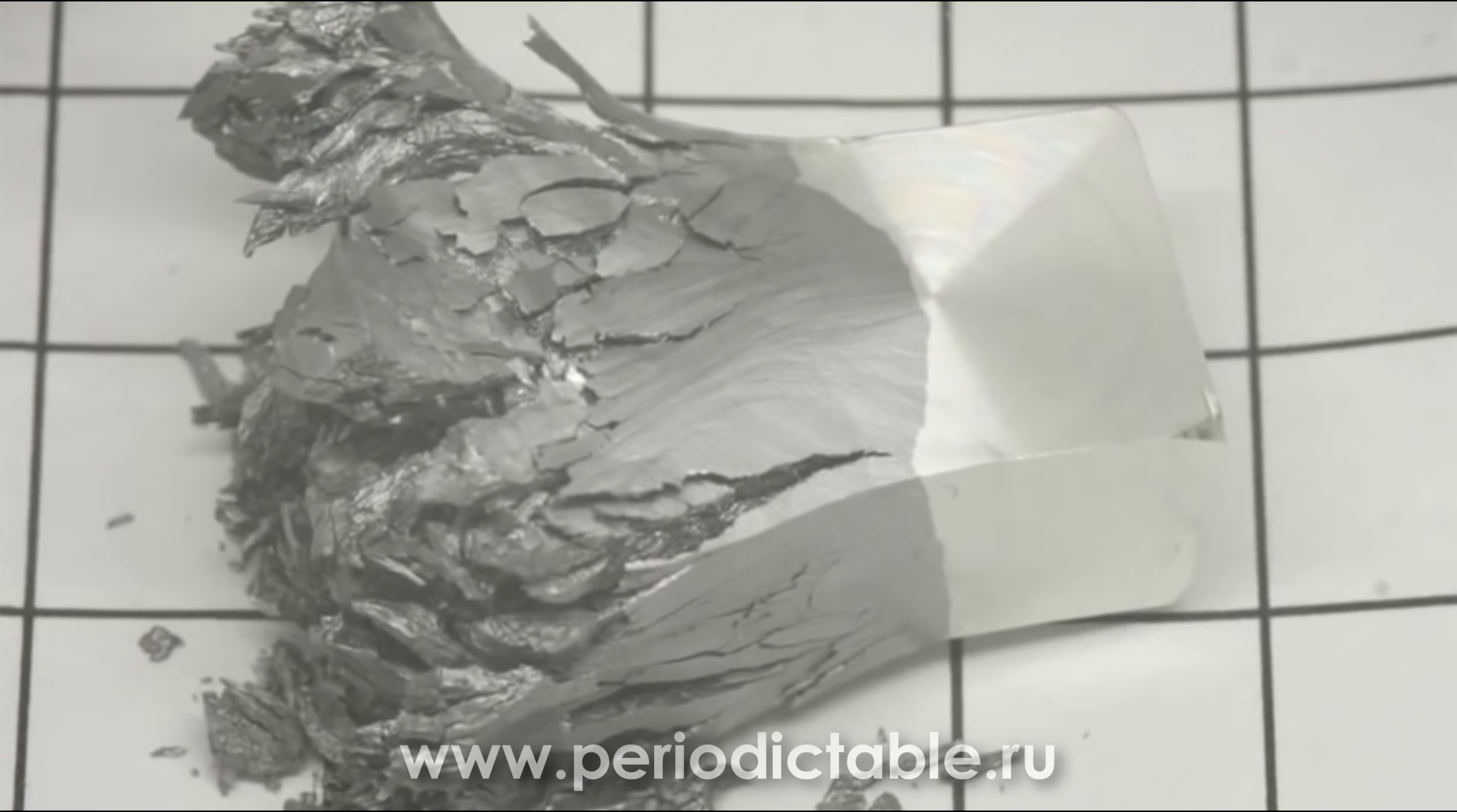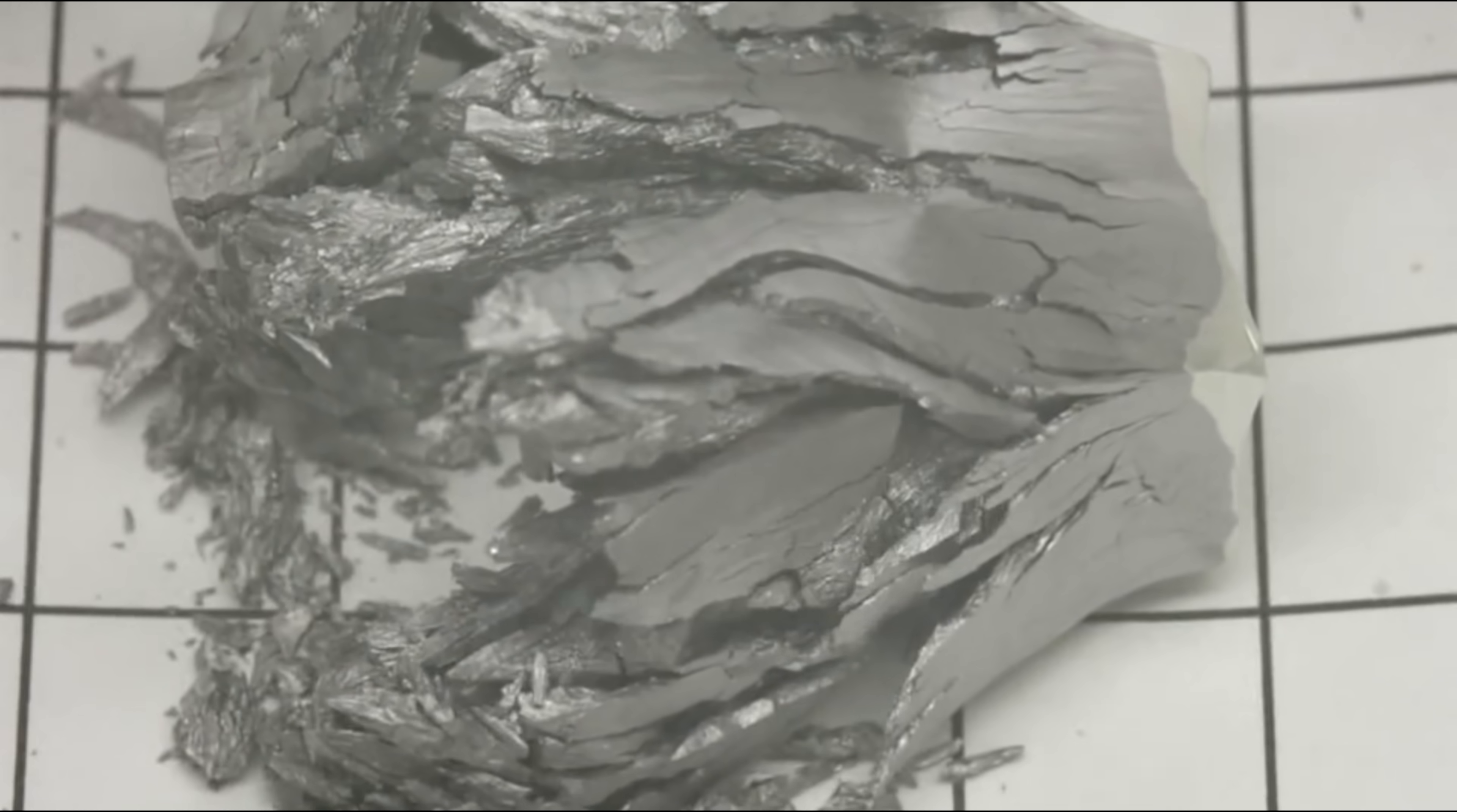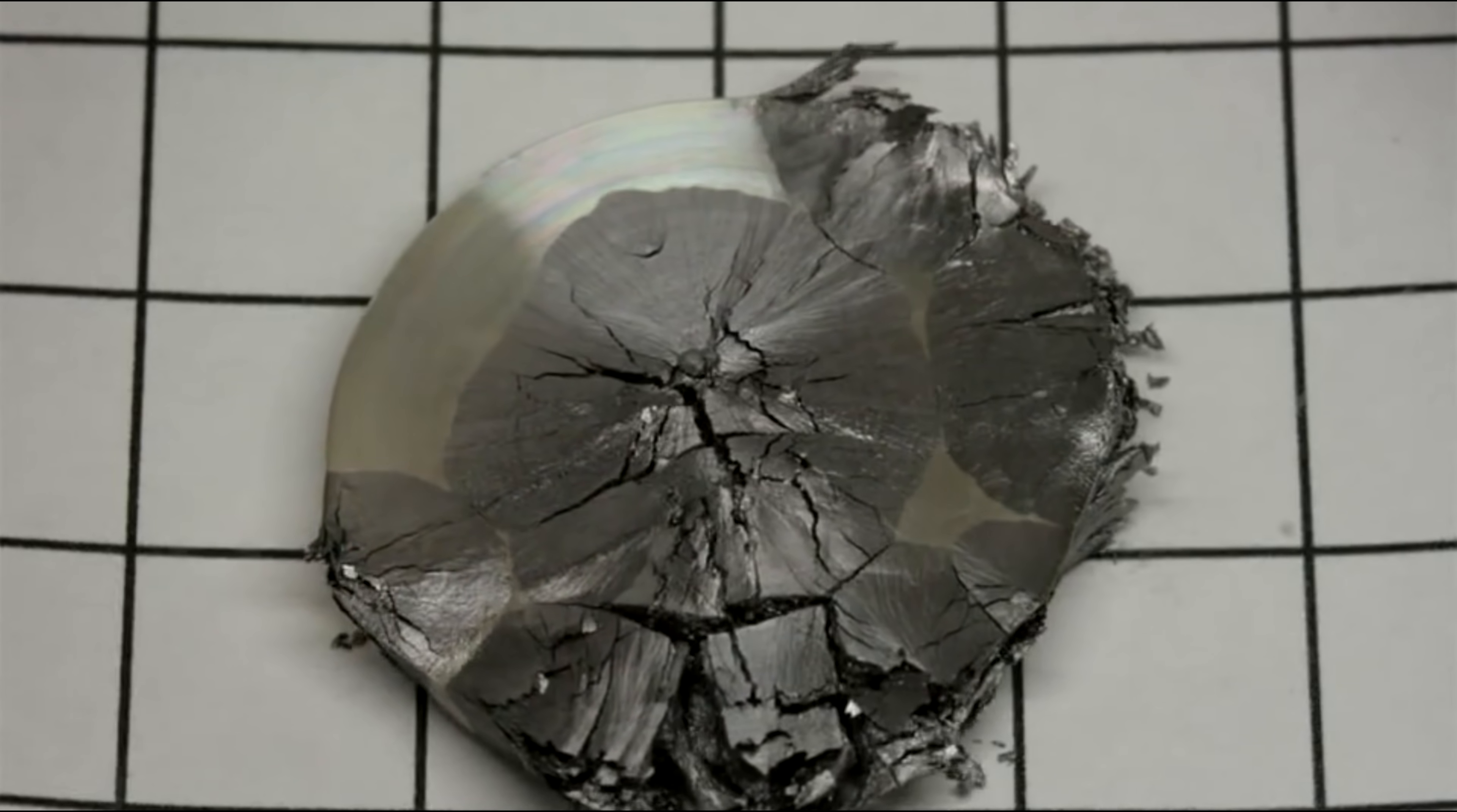In this video courtesy of the website periodictable.ru, you can observe the process of the transition from white tin to gray. Since gray tin has a completely different crystal structure, similar to the structure of a diamond, any product made of white tin with this transformation will simply fall apart into pieces. This effect is also called the tin plague.